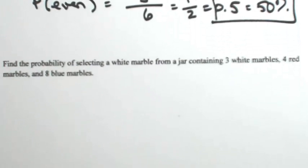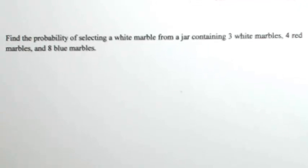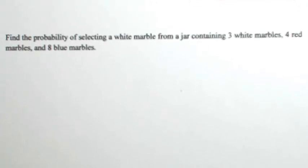Let's look at another one doing the same thing. In this example, we're given the sample space. Find the probability of selecting a white marble from a jar containing three white marbles, four red marbles, and eight blue marbles. Right from the get-go, we're given our sample space.